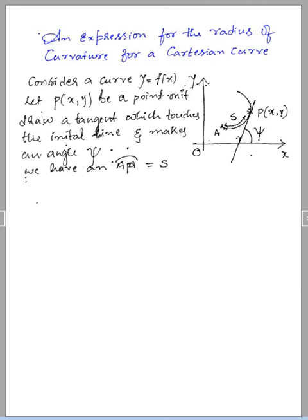So, next, from the figure, I can consider tan psi. As we have considered a tangent, tan psi is defined by dy by dx, which is the slope of the tangent. So, tan psi is equal to dy by dx. This is a very simple proof — you can easily solve this within 5 minutes.